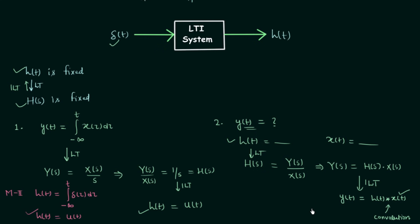Convolution is a linear and time-invariant operator. We will understand more about convolution in the coming presentations, including different methods to perform it and properties of convolution that will make the task easier. This is all for this presentation — we have covered what impulse response is, why it is used to define an LTI system, how to calculate the impulse response when the system relationship is given, and how to obtain the output using convolution. If you have any doubt, you may ask in the comment section. See you in the next one.